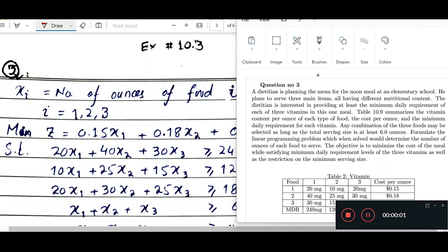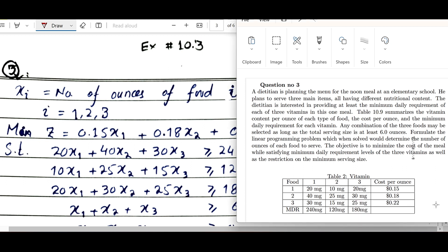Question number three: A dietitian is planning the menu for the noon meal at an elementary school. He plans to serve three main items all having different nutritional contents. The dietitian is interested in providing at least the minimum daily requirement of each of the three vitamins in this one meal.